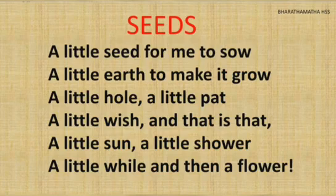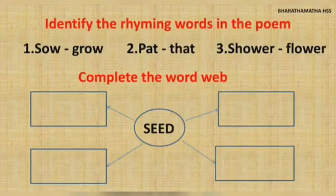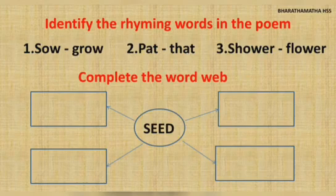Let's move on to the activities. Identify the rhyming words in the poem. The first set of rhyming words are: sow and grow, pat and that, shower and flower.